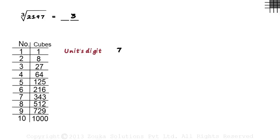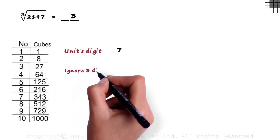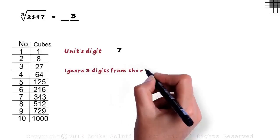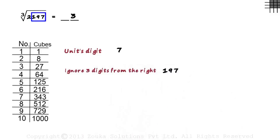The next step is interesting. We ignore 3 digits from the right of the number. So we ignore 197 for the moment and look at the number that remains. It's 2.